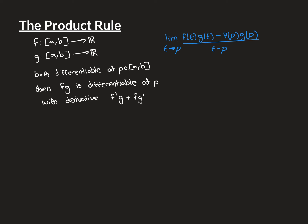So let's prove this. We're going to start with f and g that are both differentiable at the point p, and we want to show that this new function constructed by multiplying f and g together is also going to be differentiable at p. If it's going to be differentiable at the point p, then this limit must exist: the limit as t approaches p of f(t)g(t) minus f(p)g(p), all divided by t minus p.